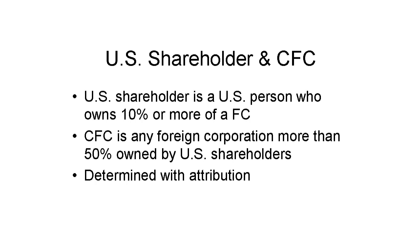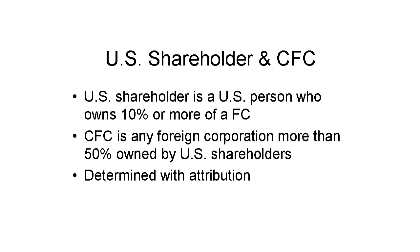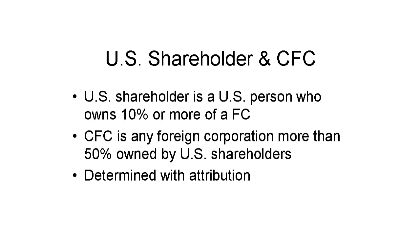Let's start with a review of some key terms. For more details on these, watch my video on subpart F definitions. A U.S. shareholder is any U.S. person who owns 10% or more of a foreign corporation. A U.S. person can include a partnership organized under U.S. law. A foreign corporation is any business entity organized outside the USA that is treated for U.S. tax purposes as a corporation — it does not include an entity that has elected flow-through treatment. A controlled foreign corporation, or CFC, is any such foreign corporation that is more than 50% owned by U.S. shareholders at any time during its tax year.